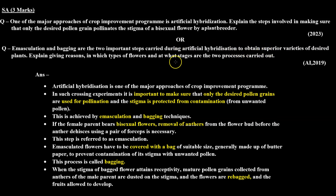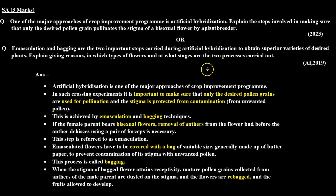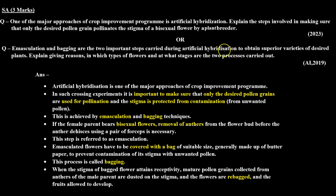There are two steps: emasculation and bagging. In emasculation, we remove the male part — the anthers — from the flower. In bagging, we cover the stigma with a butter paper bag so that it will not be contaminated with any unwanted pollen. Then we pollinate it with the desired pollen and re-bag it.